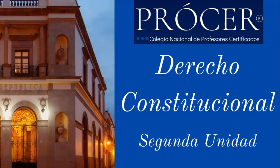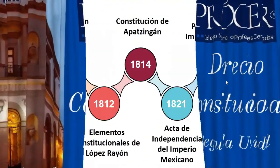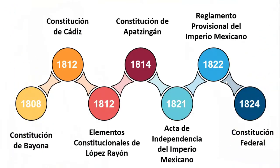Continuamos con esta serie de resúmenes ejecutivos. En este caso vamos a analizar la segunda parte de la asignatura Derecho Constitucional. En esta parte vamos a revisar algunos puntos históricos muy importantes: la historia del constitucionalismo mexicano. Vamos a partir analizando la importancia que tuvo la Constitución de Bayona del año de 1808, una constitución que fue impuesta por Napoleón Bonaparte a España y a sus colonias en América.